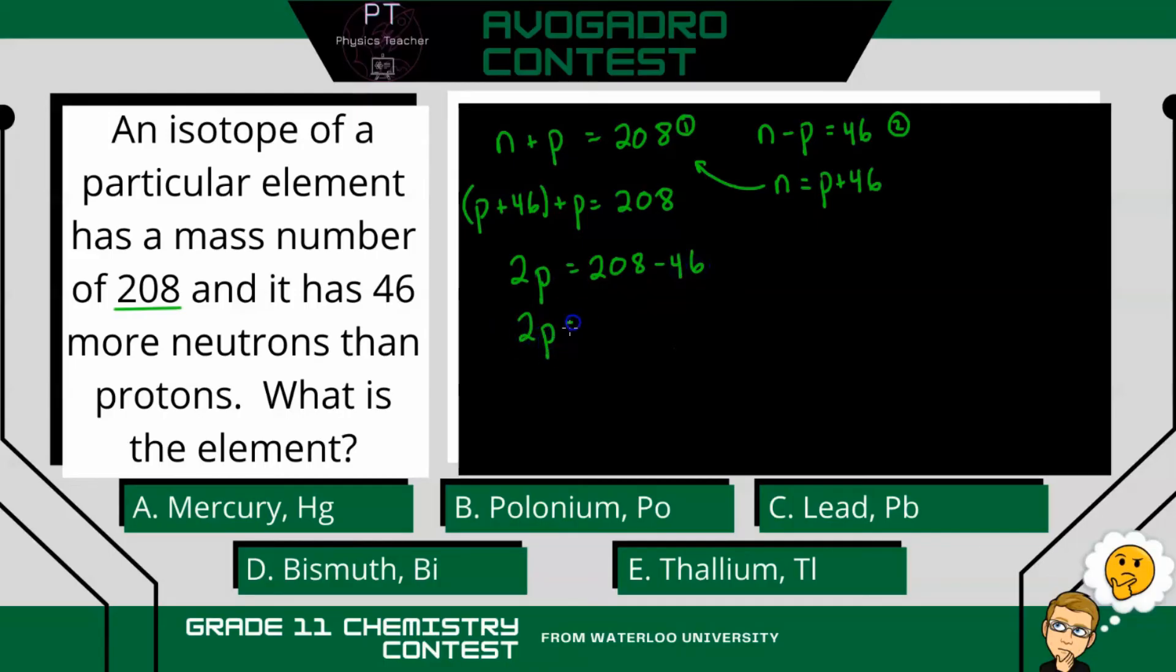So we just continue to solve this equation. So 2p equals 162. Divide both sides by 2. And we'll get the number of protons as 81.